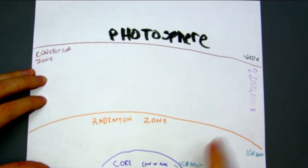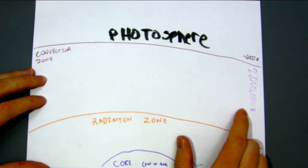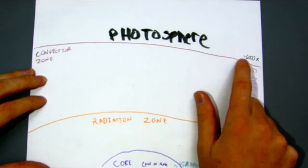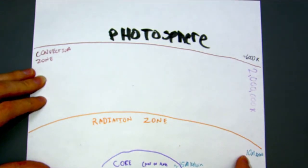As far as temperature goes, the convection zone right here is about 2 million Kelvin, whereas the photosphere above it is about 6,000 Kelvin and the radiation zone below it is 10 million Kelvin.